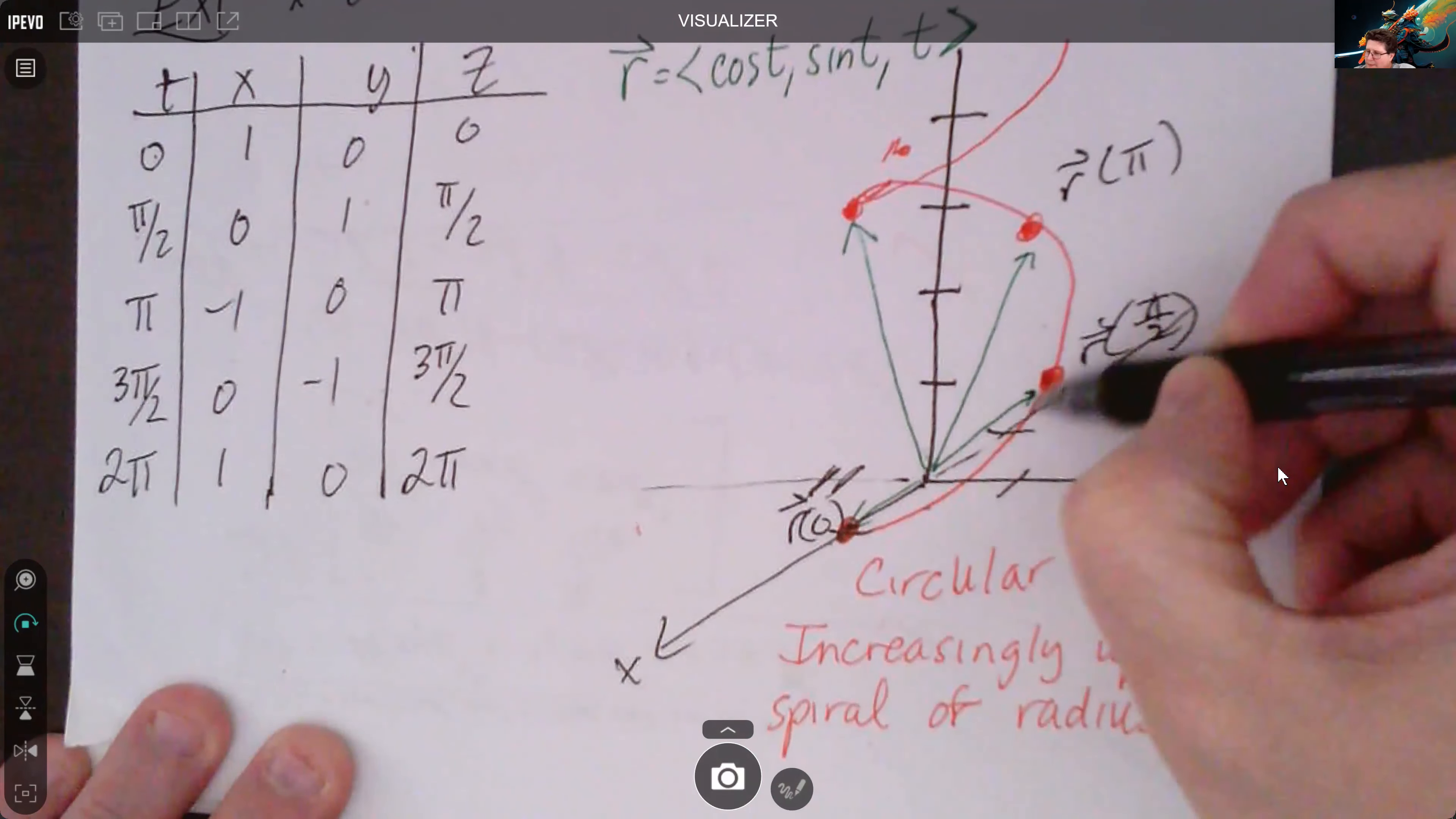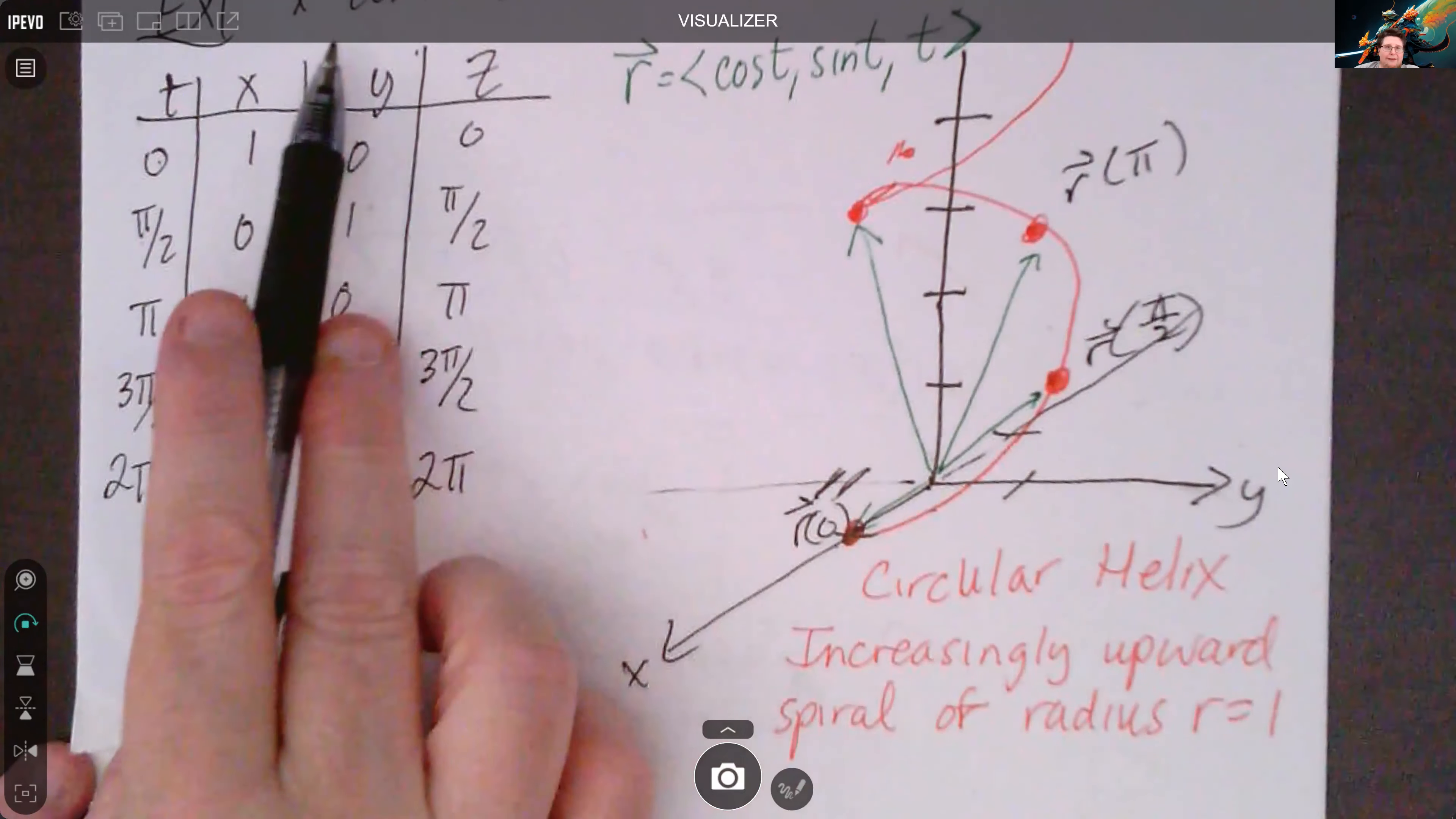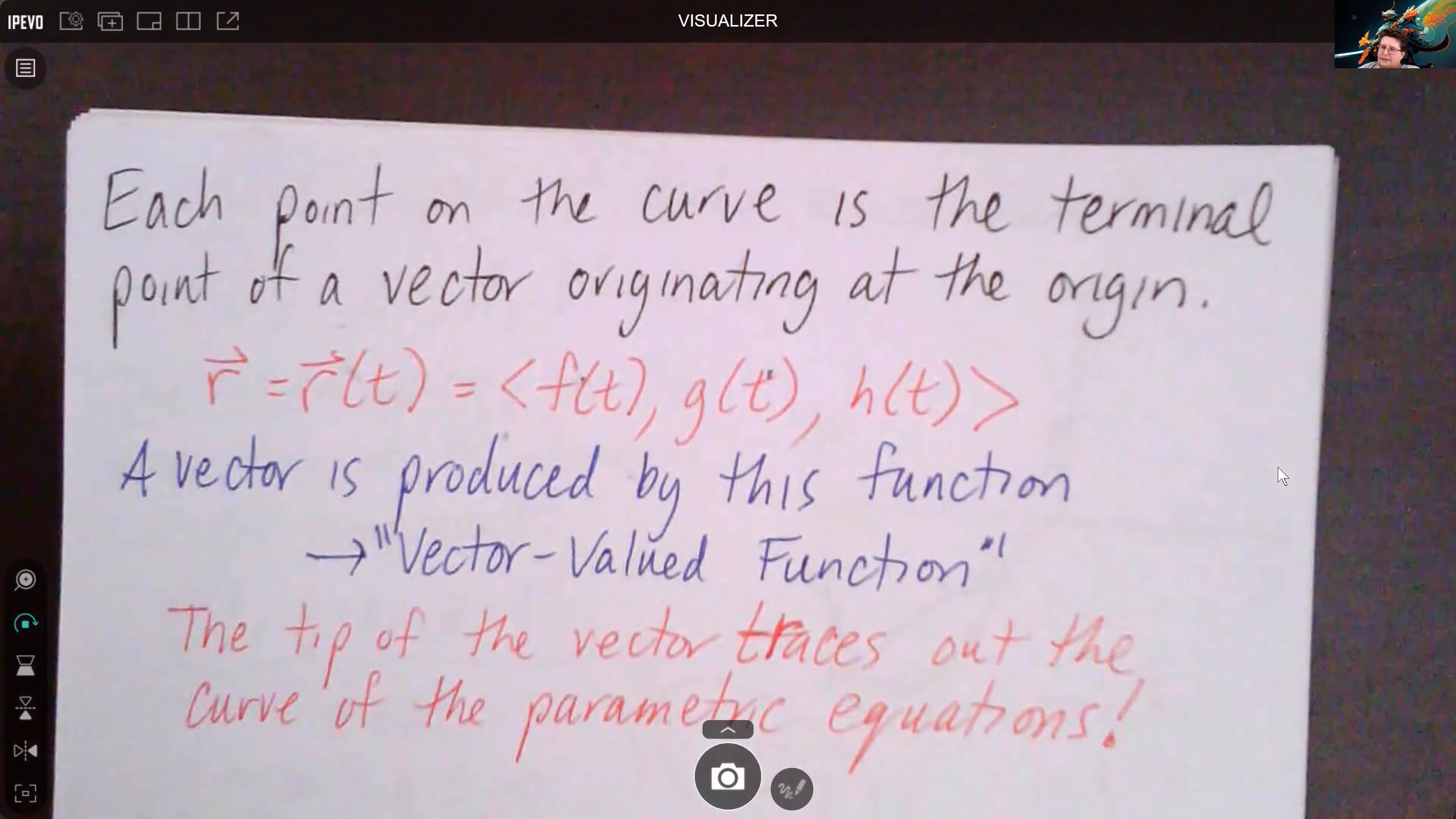It's going back along the x-axis, negative one. It's a little hard to sketch, but we can see this is just going up in a circle like a little spiral around the z-axis. So it's called a circular helix. It's increasingly upward and it's got a radius of one because we don't have any multiples on cosine or sine at this point. Okay, let's take a look at the next part of it.